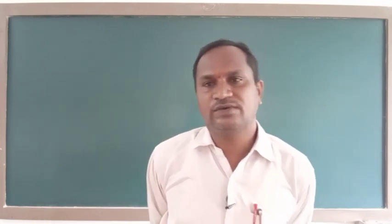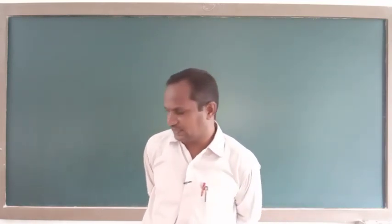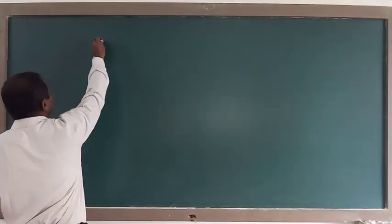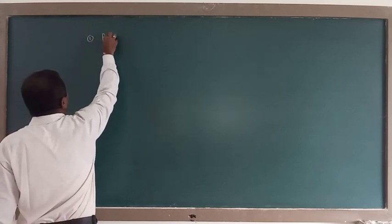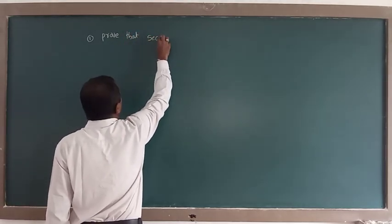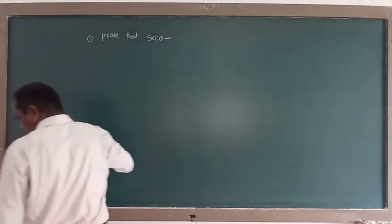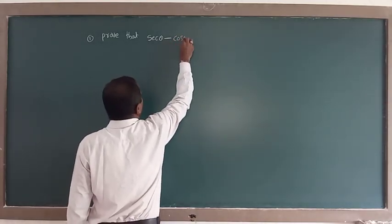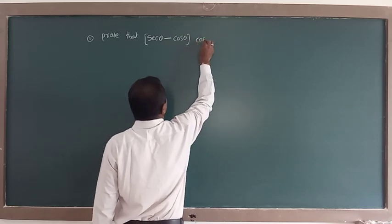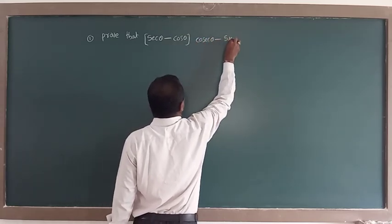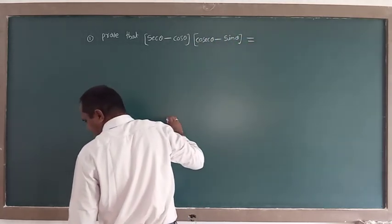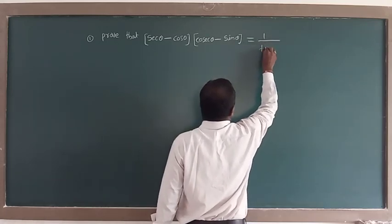Today also we will solve some different types of problems on trigonometric functions. The first problem is: prove that secant theta minus cos theta, into cosecant theta minus sin theta, is equal to 1 by tan theta plus cot theta. How can we give a solution for this question?